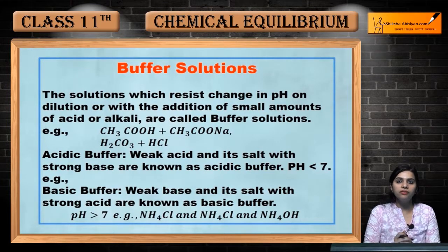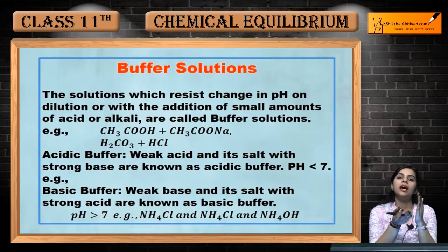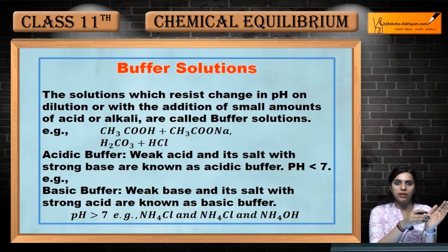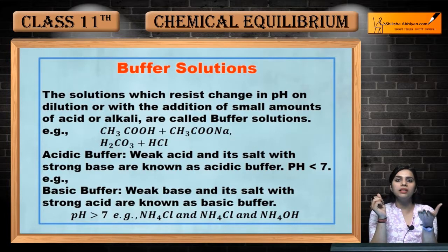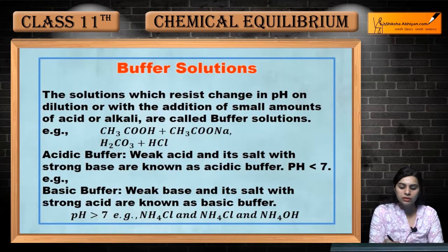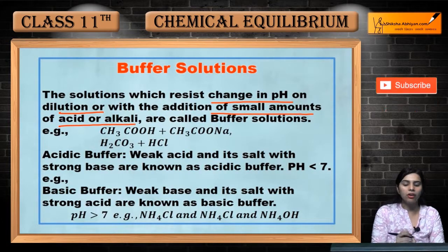Now next is buffer solutions. Buffer solutions kya hote hai — humne abhi tak suna ik general term mein — buffer solutions woh solution hai ke aapne kisi bhi reaction mein thoda sa amount dala to koi bhi pH mein change nahi aega. Hamare buffer bhi dho type ke hote hai: acidic aur basic. Woh depend karta hai ki hamne kis reaction mein usse dala hai. Buffer solution isliye dala jata hai ke pH maintained rahe — na to pH acidic ho, na jada basic ho. The solutions which resist change in pH on dilution or with the addition of small amounts of acid aur alkali.